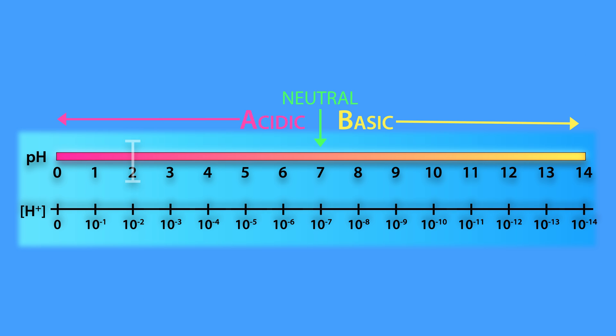For example, if the pH changes from 2 to 5, the hydrogen ion concentration will change by a factor of 1000.